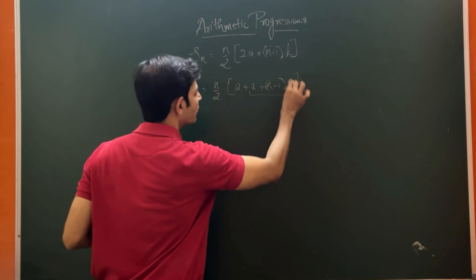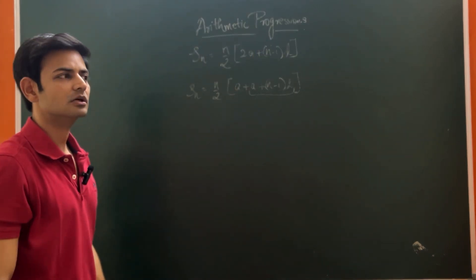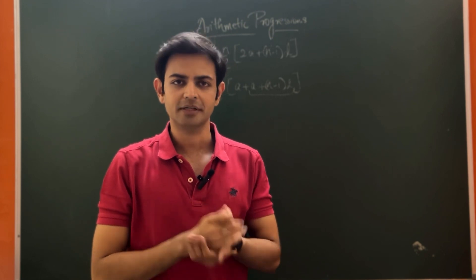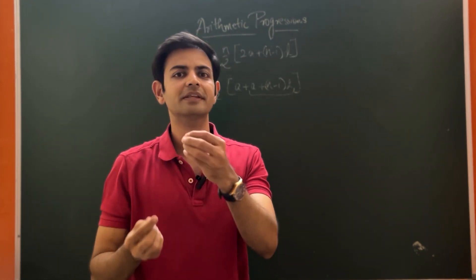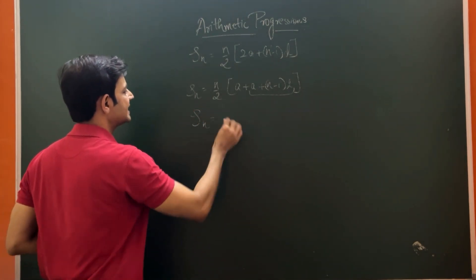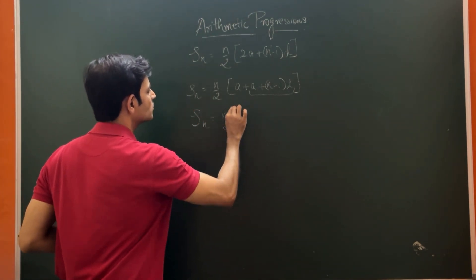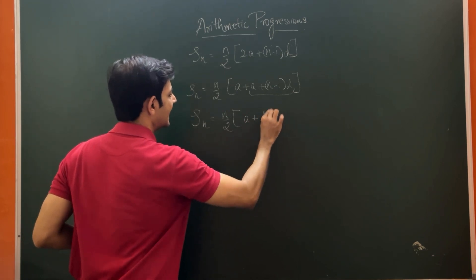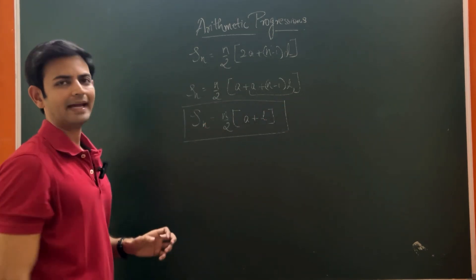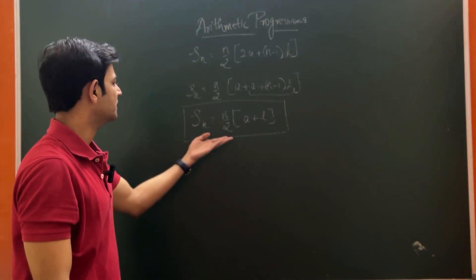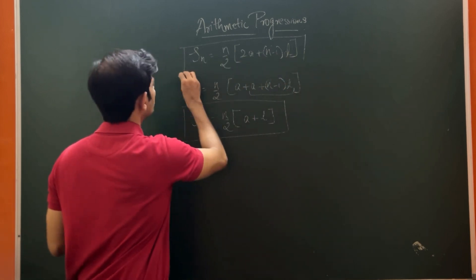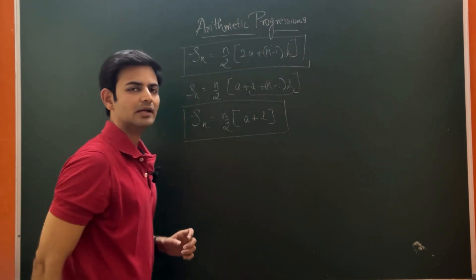We can also derive one more formula from here, that is N by 2 into instead of 2A, I can write A plus A plus N minus 1 D. This is the formula for the last term or nth term. In case you are not given the common difference in the question and you are given the last term or the nth term, you can apply the formula as SN is equal to N by 2 into A plus L or TN. You can apply this or this depending upon what is given to you in the question.